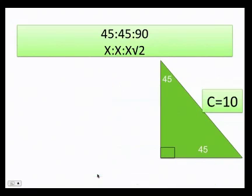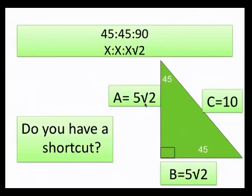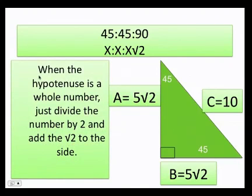Is there a shortcut for this? Yes! When the hypotenuse is a whole number, simply divide it by 2 and then add the square root of 2. For example, with a hypotenuse of 10: 10 divided by 2 is 5, so each leg is 5√2. When the hypotenuse is a whole number, divide by 2 and add √2 to get the leg length.